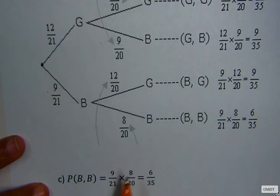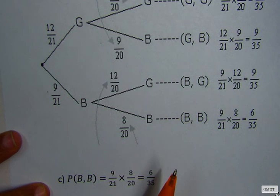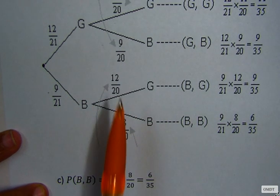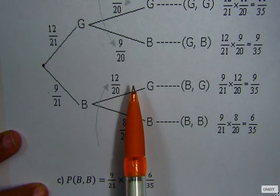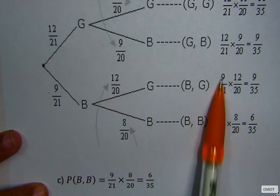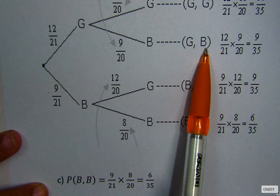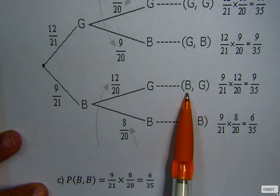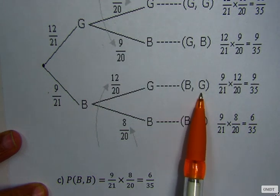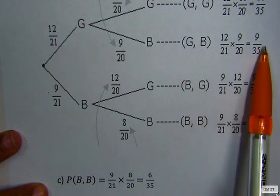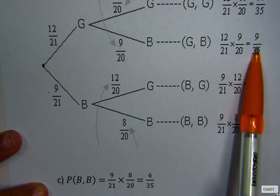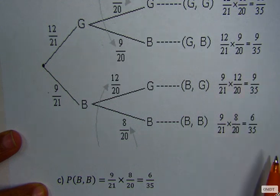The next part of the question says probability where one is blue and the other marble is green. So you look at your possible outcomes. Here you have one blue, one green, and here you also have one blue, one green. So you multiply the probabilities on the branches, and then what you do, you add the two to get your final probability.